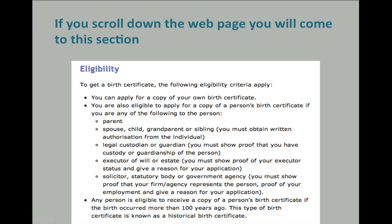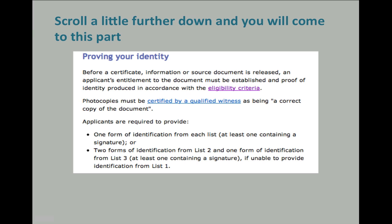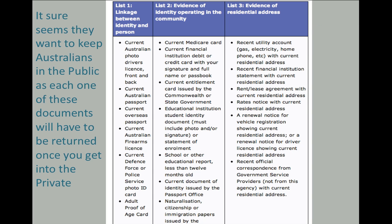To get a birth certificate, the following eligibility criteria apply. You can apply for a copy of your own birth certificate, so that's all you need to worry about. If you're applying for your own one, go ahead — but now the proving your identity comes into play. Before a certificate, information, or source document is released, an applicant's entitlement to the document must be established. It seems they want to keep Australians tied to the public, as each one of these documents will have to be returned once you get into the private certificate.